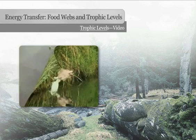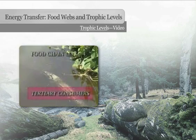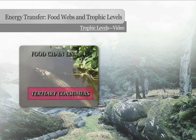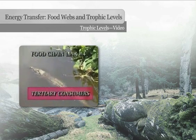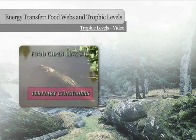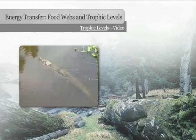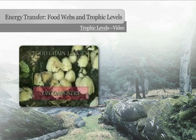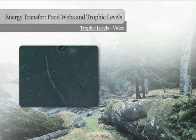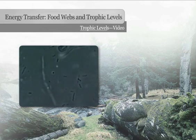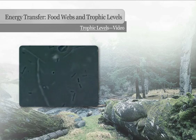Then come the tertiary consumers, who eat the secondary consumers. Tertiary consumers are often large meat-eating animals like this alligator. The final link in a food chain are the decomposers — organisms such as fungi and bacteria like these. Decomposers cause decay; they break down dead materials and turn them into nutrients for the food producers.